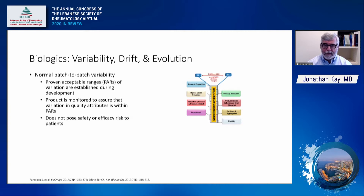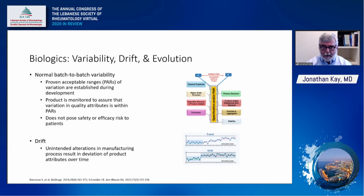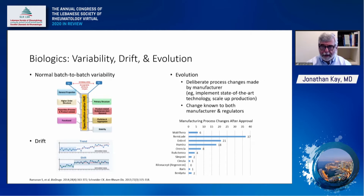There is also drift that occurs during manufacture, due to unintended alterations in manufacturing which result in deviation of product attributes over time. In the top graph you see a gradual increase in an attribute falling within the proven acceptable range — this is a trend. On the bottom graph, there is a sudden shift, also within the proven acceptable range. In addition to variability and drift, there is evolution, due to deliberate process changes made by manufacturers, such as implementing state-of-the-art technology or scaling up production.